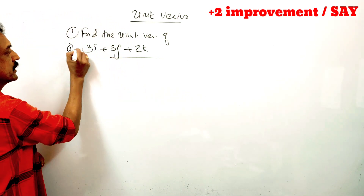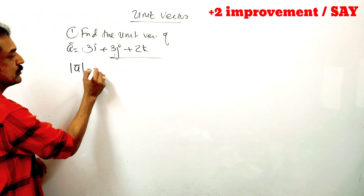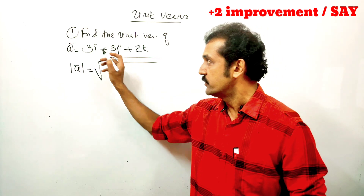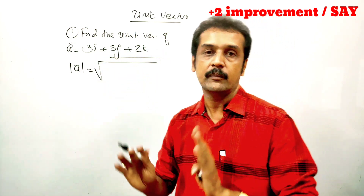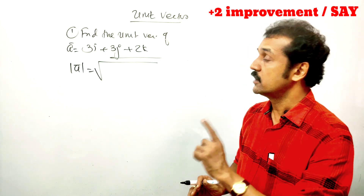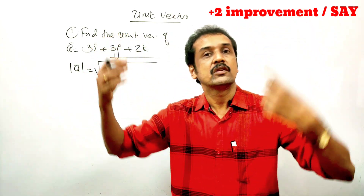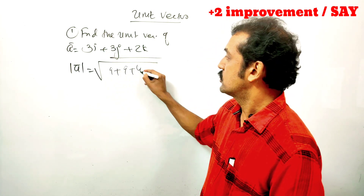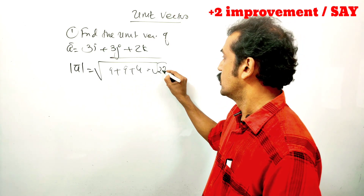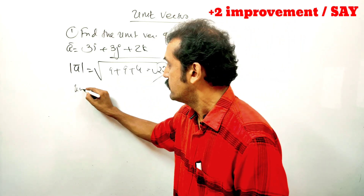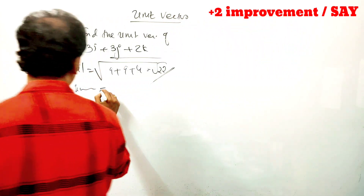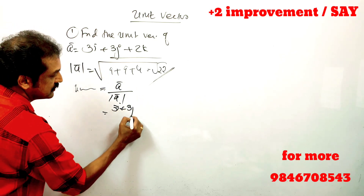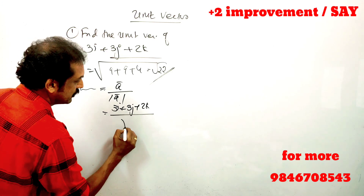Now let's look at the modulus of the vector. 3 squared is 9, 3 squared is 9, 2 squared is 4 — that gives us root of 22. So the unit vector is equal to that vector divided by the modulus of that vector, that is 3i plus 3j plus 2k by root of 22.